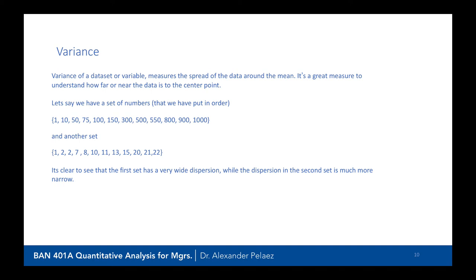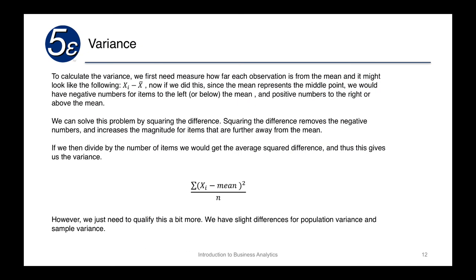Variance of a data set measures the spread around the central tendency, which in most cases is going to be the mean. It's a great measure to understand how far observations are away from the center point. Let's assume we have a set of numbers and another set with obviously smaller numbers. We can observe by eye that the first one has a very large dispersion around the center point, which is somewhere around 300, whereas the other one has a smaller dispersion around 10 or 11.